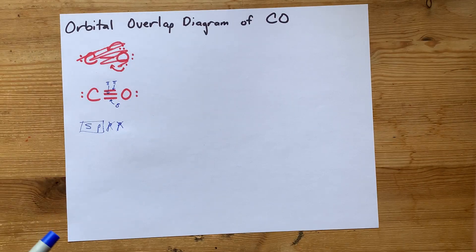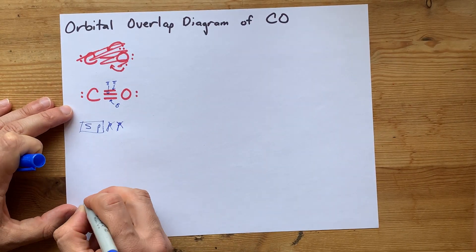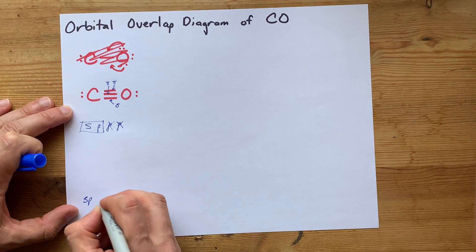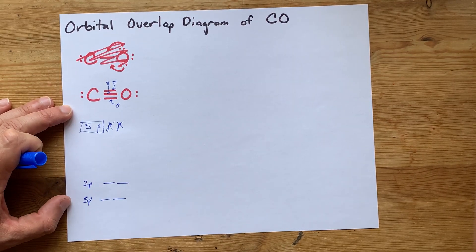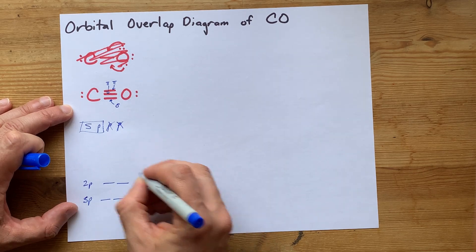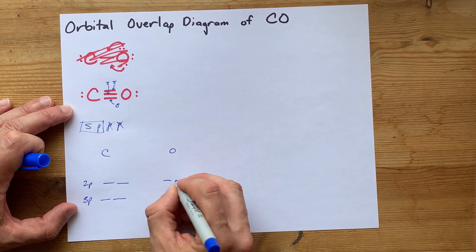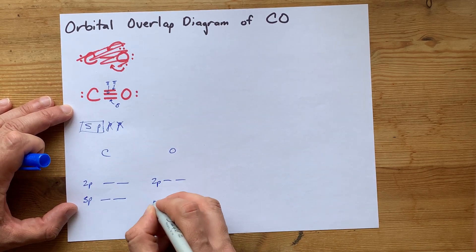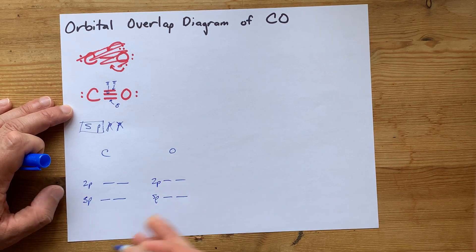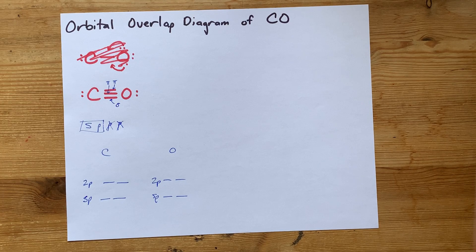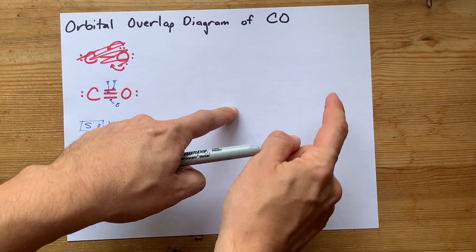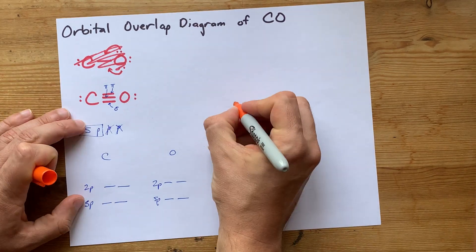Now, what that means is that carbon has two SP orbitals and two 2P orbitals. Oxygen actually has the same. I'm going to draw them here. I should not be drawing them at the same height, but this is just a rough sketch to help you see what's going on. You're going to have to draw a carbon and an oxygen. I'll start. Carbon.